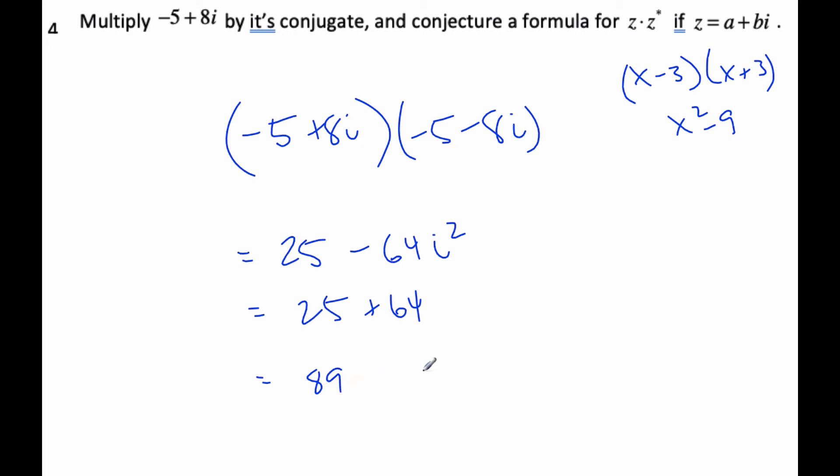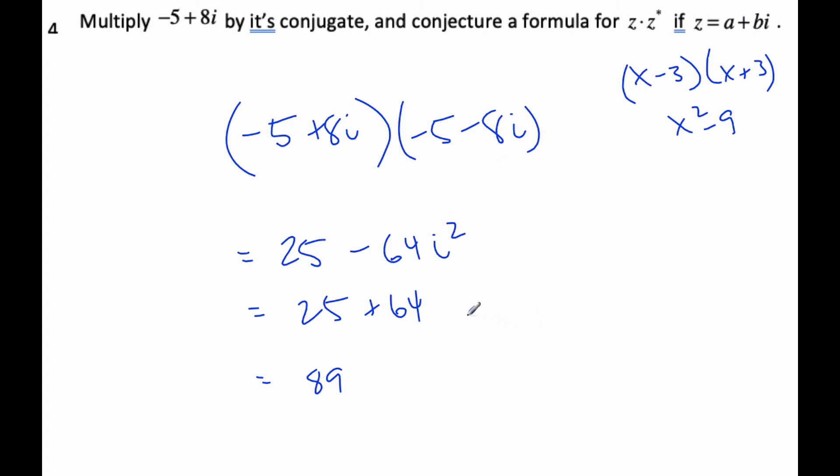And so, if I'm going to conjecture a formula for this, well, this process is going to work all the time. So it would be (a + bi)(a - bi). And if I go z times z conjugate, I believe I'm going to get a² + b², whatever I get for that.